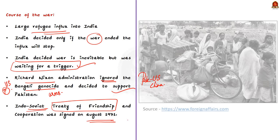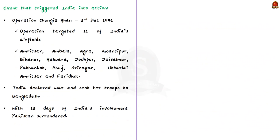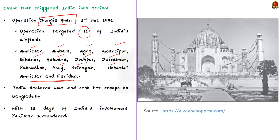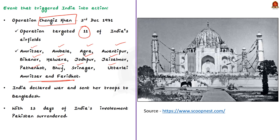On the evening of 3rd December, the Pakistani military launched Operation Genghis Khan, targeting 11 of India's airfields and including artillery strikes on Indian positions in Kashmir. The targets included Indian bases at Amritsar, Ambala, Agra, Avantipur, Bikaner, Halwara, Jodhpur, Jaisalmer, Pathankot, Bhuj, Srinagar, Uttarlai, and air defence radars at Amritsar and Faridkot. As an interesting side note, to prevent the visibility of the Taj Mahal at night during air raids by the Pakistan Air Force, the Taj Mahal was covered in jute.